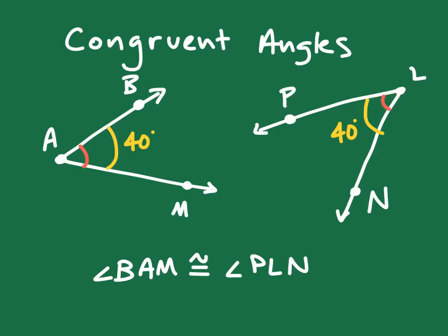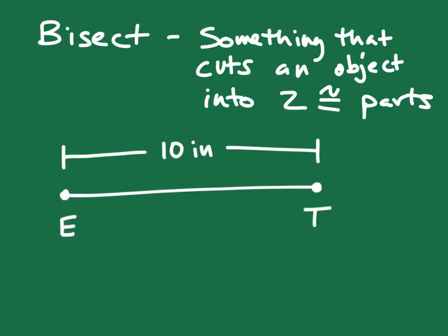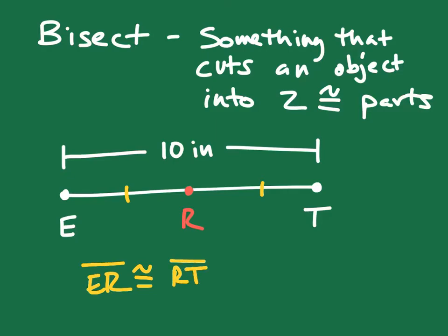This brings us to another word: bisect. Bisect means to cut an object into two congruent parts. For example, if I have segment ET with a length of 10 inches, and I place a midpoint R inside that segment, it cuts the segment into two congruent parts. I can use tick marks to show that ER is congruent to RT. That's what a bisector does.